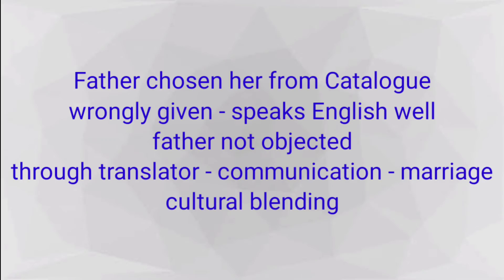A question may arise: how did an American come to marry a Chinese woman and settle in America? To answer this, the author gives a dim flashback here and there. A catalog was given to the father and he chose her from it. He didn't know she doesn't speak English — it was written that she speaks good English. Later he understands she doesn't speak English, but he doesn't object. He managed to communicate with her through a paid waitress at a hotel restaurant, and only with the help of a translator did they get married.